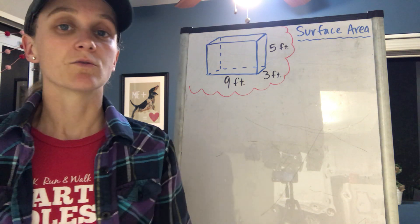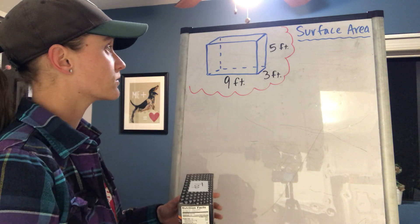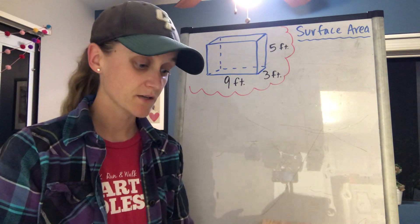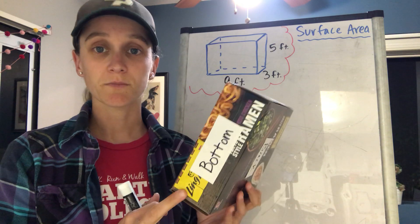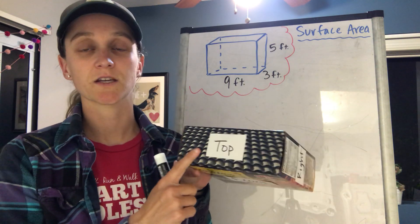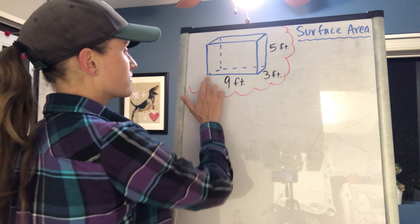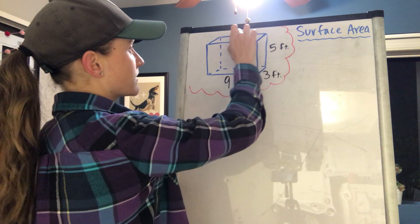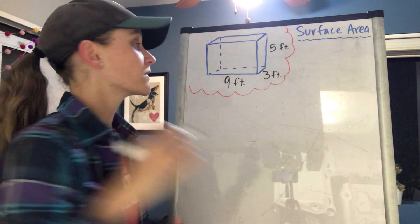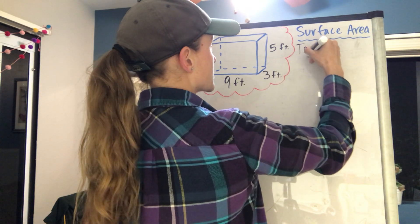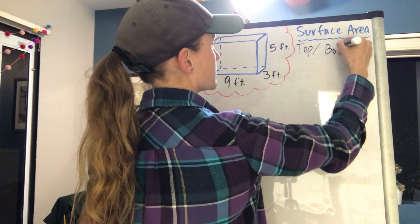Remember, we found out in the other video that if you find the area of the bottom, that's gonna be the same thing as the top on a rectangular prism because they're the exact same size. So if I can find the area of the bottom, I just times that by two because it's gonna be the same as the top. I'm gonna say the top slash the bottom, I'll just group them together.